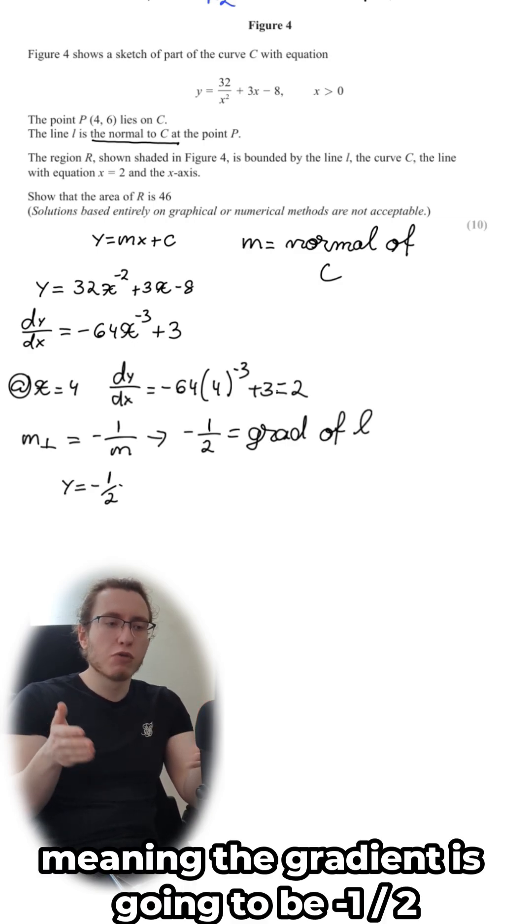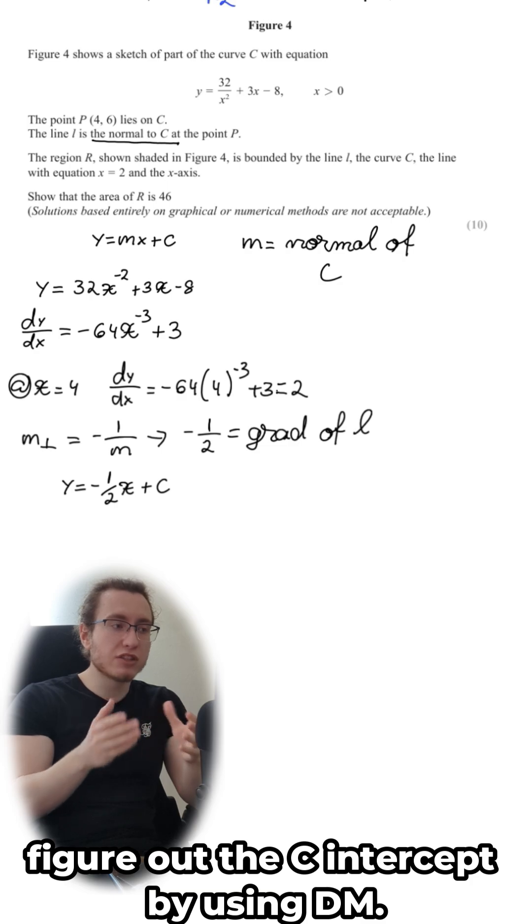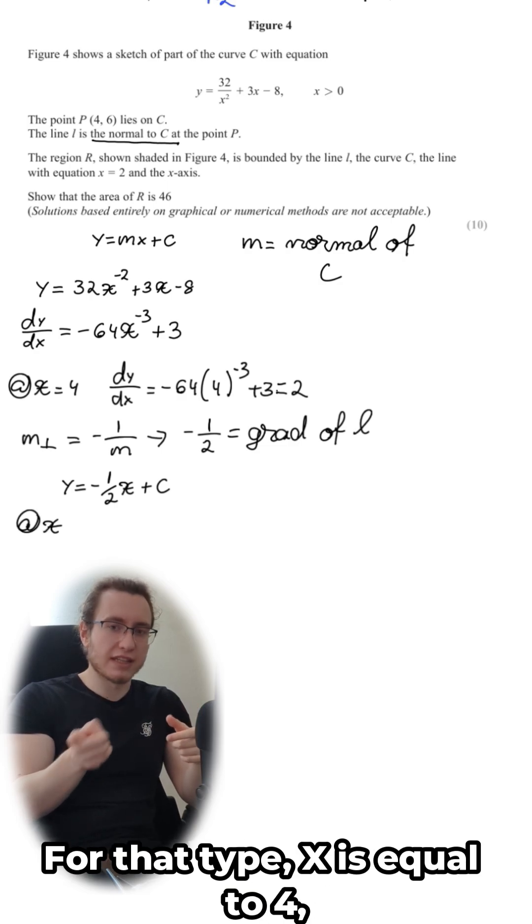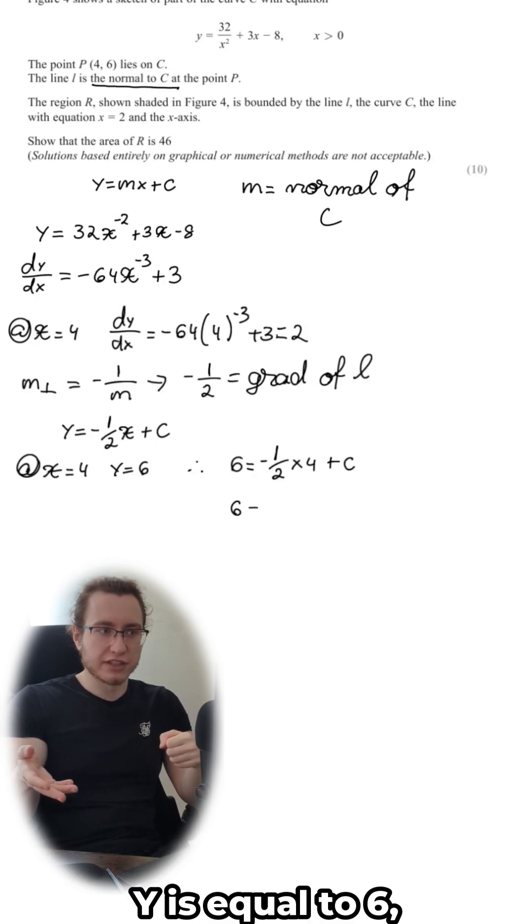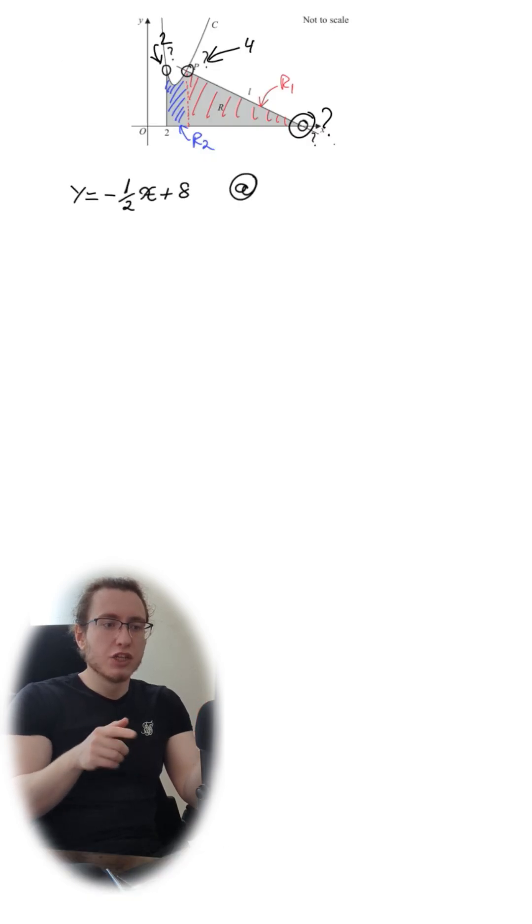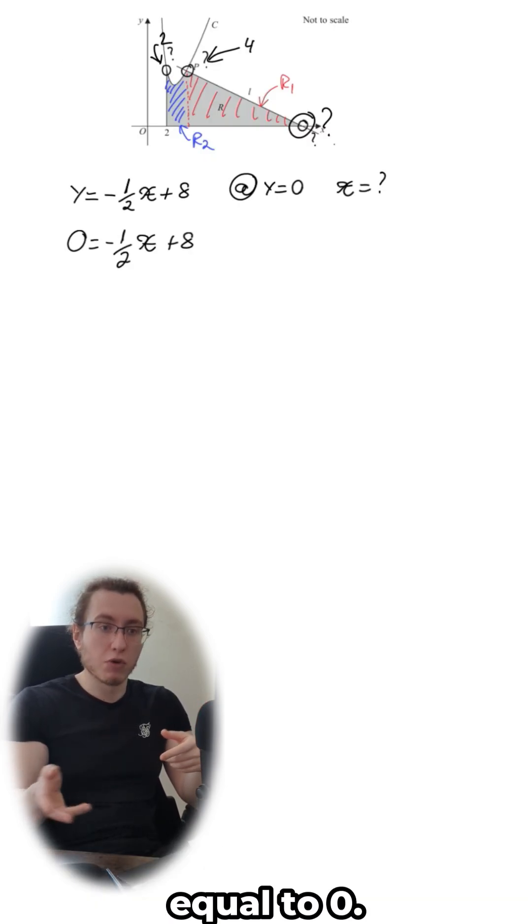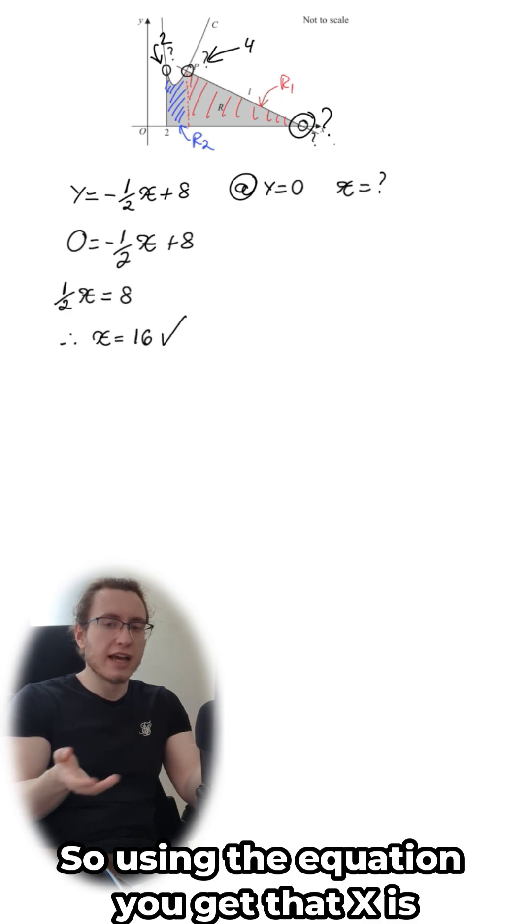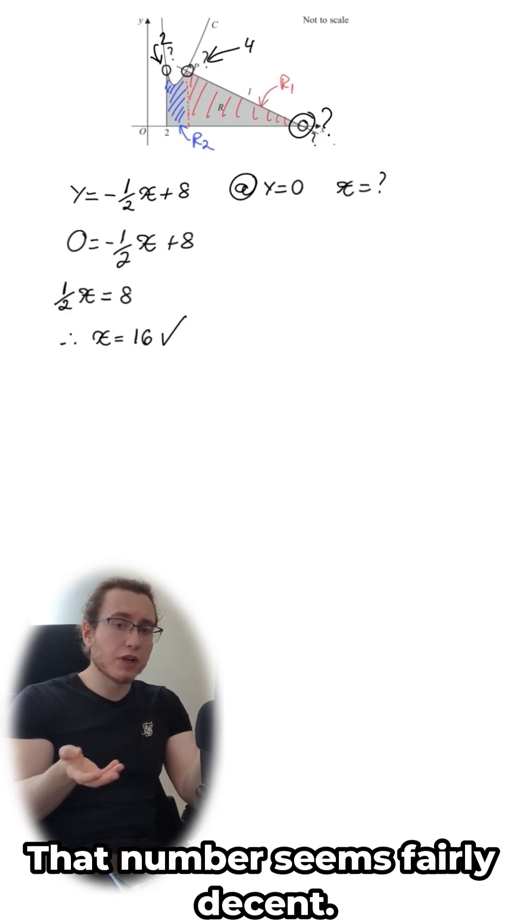From that you can figure out the c-intercept by using the info that at x is equal to 4, y is equal to 6, giving you c as 8. Now that you have the equation of the line, you need the x coordinate at which y is equal to 0. So using the equation, you get that x is equal to 16. That number seems fairly decent. It's far away from the other two coordinates, so it seems to check out.